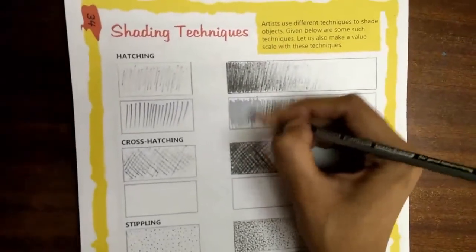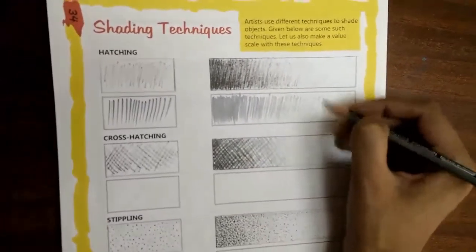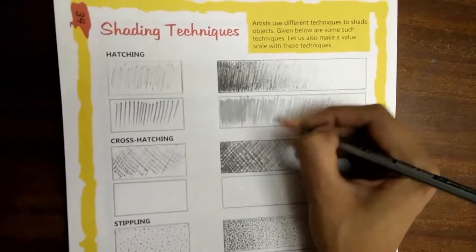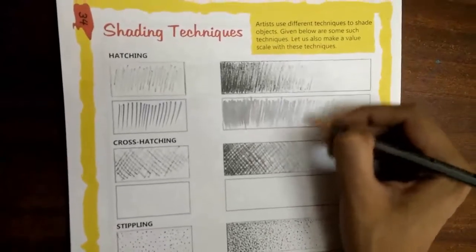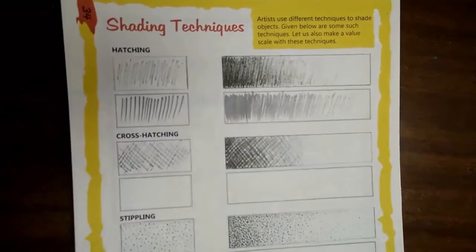We also vary the pressure on the pencil to vary the shade. And we get a value scale.